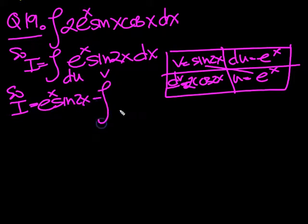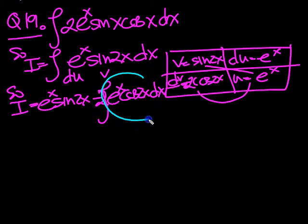Minus the integral of u du v, which will be 2. Put that at the front. E to the x cos 2x dx. Now I can circle that. E to the x cos 2x there. And let that equal j.